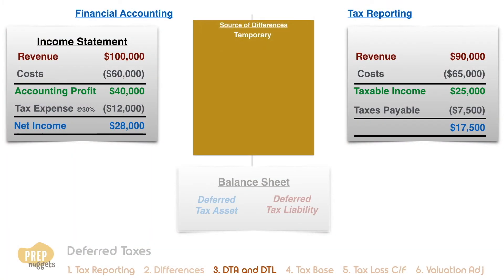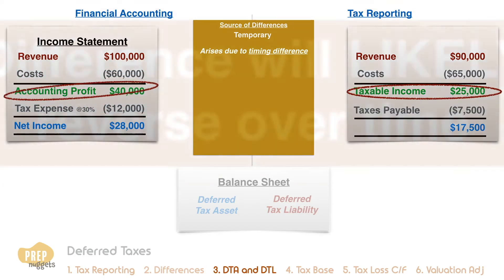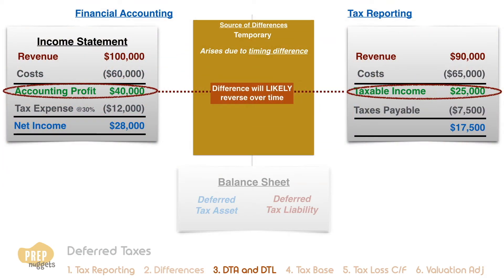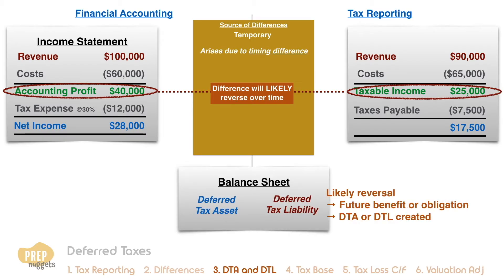Temporary differences are likely to be reversed in the future. They arise due to timing differences in the recognition of revenue and expenses. As the future reversals bring about potential benefits and obligations to the firm, deferred tax assets and liabilities are created to reconcile such timing differences.